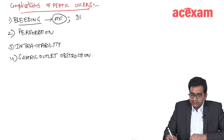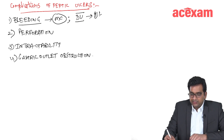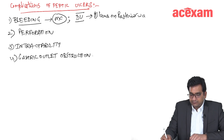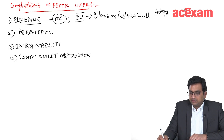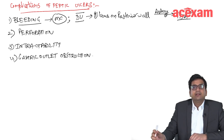In duodenal ulcers, the bleeding occurs from ulcers on the posterior wall, and the artery responsible is the gastroduodenal artery (GDA).